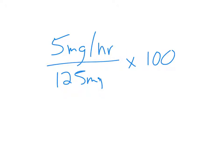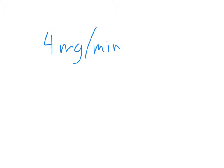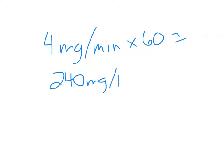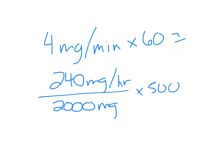Number five is very similar to what we did in number three. On number five, because it's given as milligrams per minute and they ordered four milligrams per minute, I multiply by 60 to see what that would be each hour — that's a total of 240 milligrams per hour. The idea is to then take it to milliliters per hour based on the dosage. The supply is two grams in 500 milliliters, which is 2,000 milligrams per 500 milliliters — and that's how we'll solve number five.